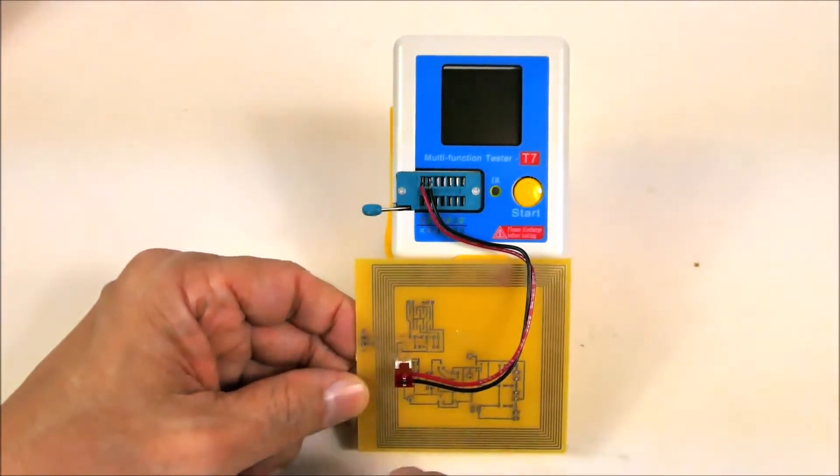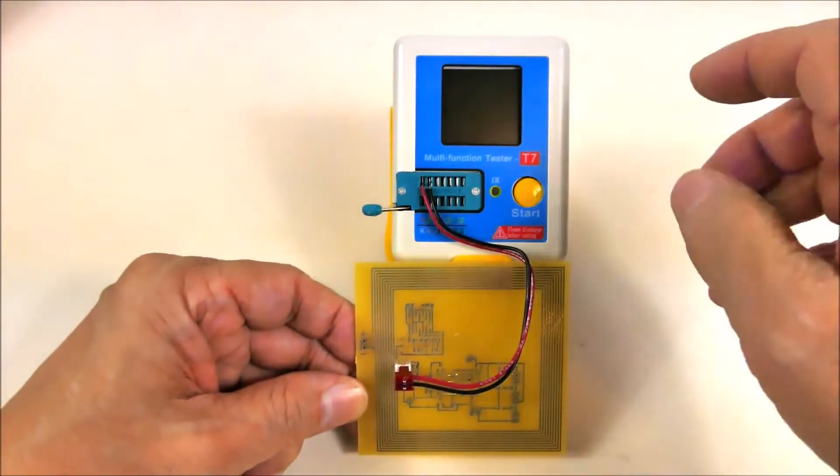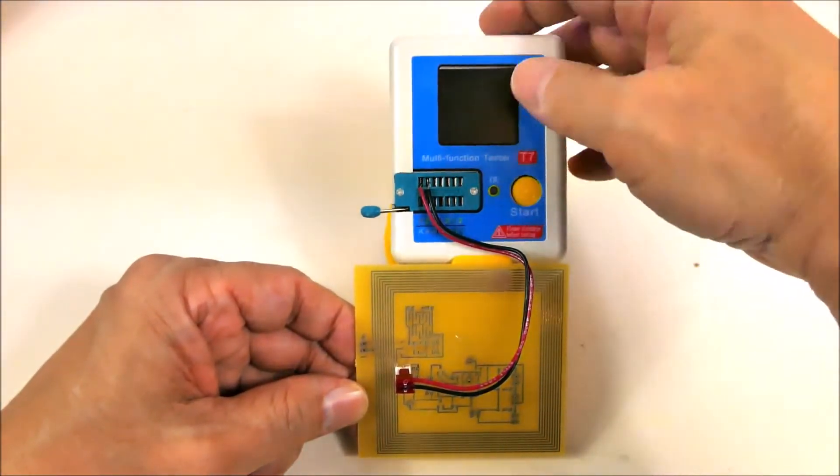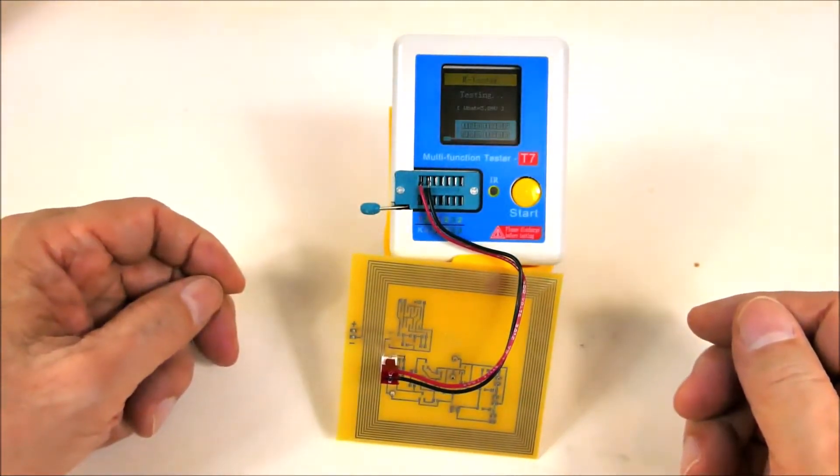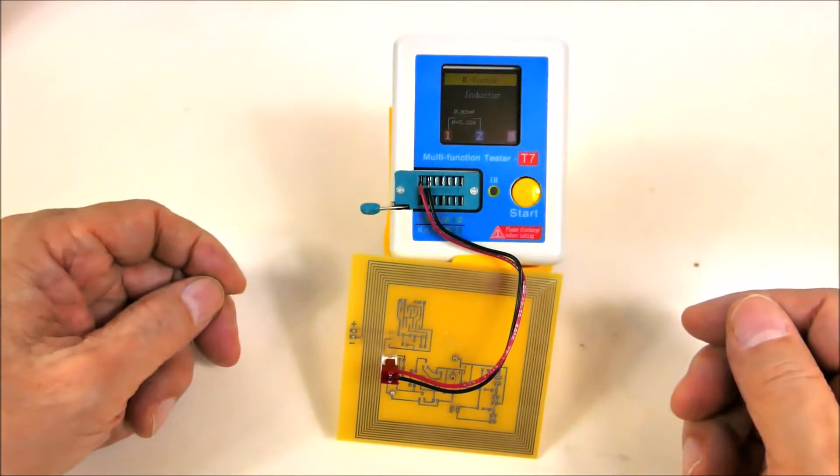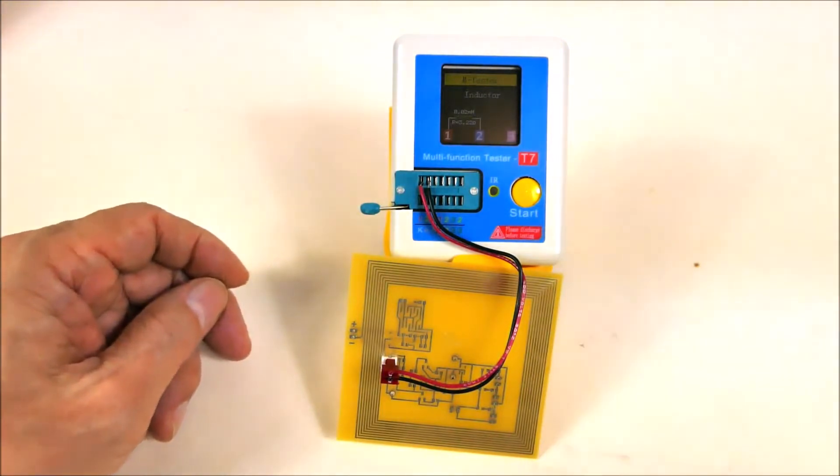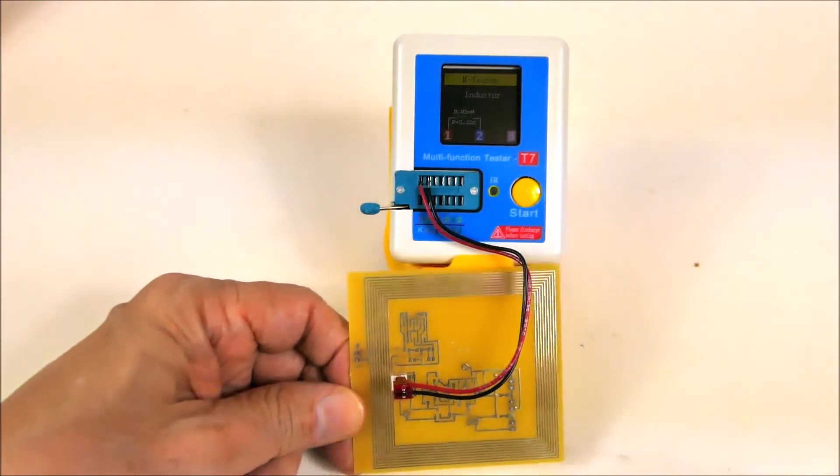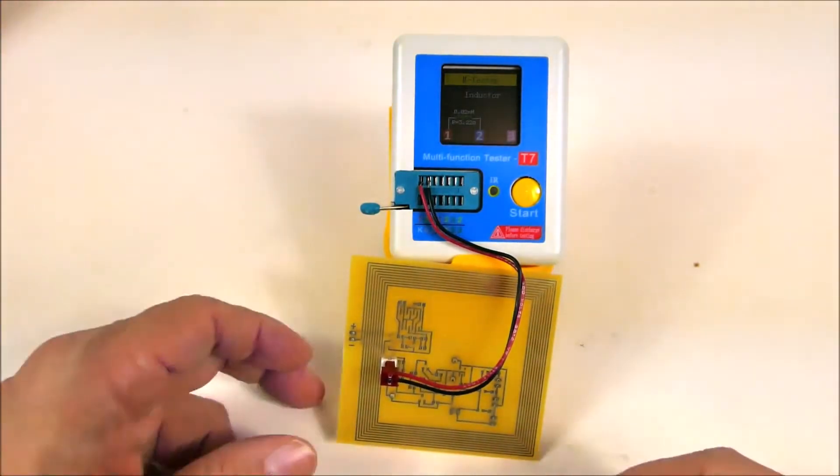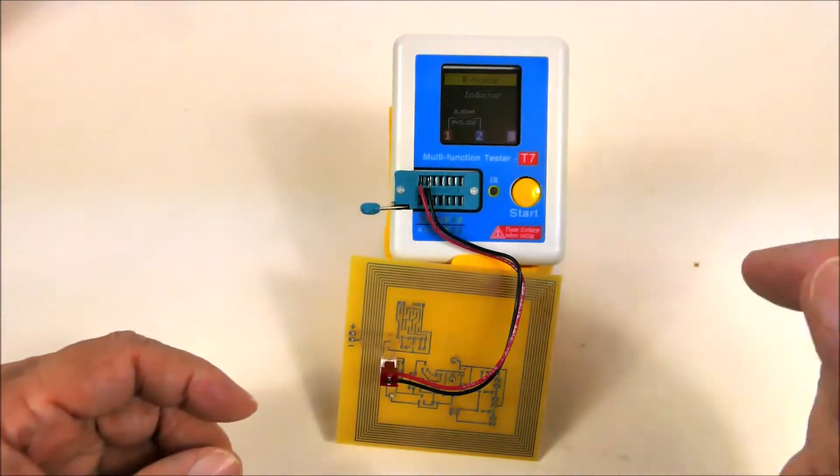coil with eight spiral turns, eight centimeters in diameter, is 0.02 millihenrys and the resistance is three ohms. This one was not designed specifically for this job - it was designed for power scavenging, but it still works with the reader.